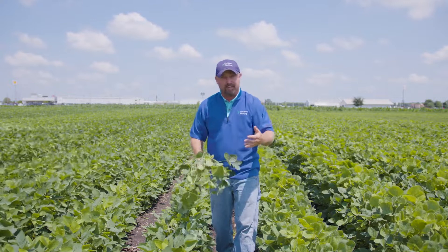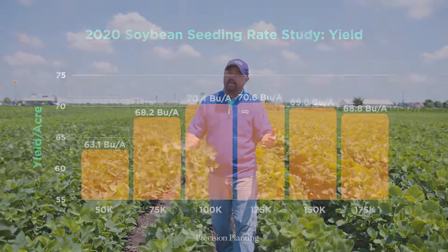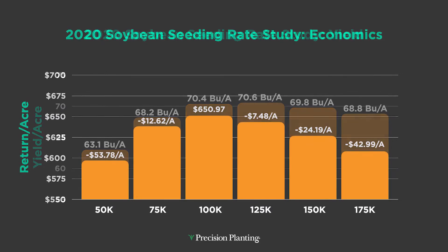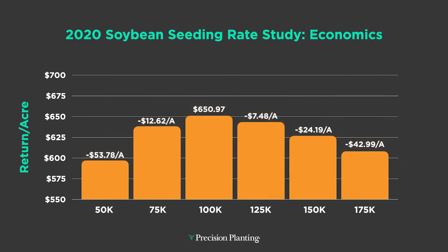I'm a firm believer that we don't have to overpopulate beans unless we have severe weed issues in the field. Looking at last year's seeding rate and yield data, this variety of soybeans gave us the highest yield at 125,000 seeds per acre in a 30-inch row. But when you factor in the cost of seed and look at the economics, 100,000 population made us the most money on a per-acre basis.